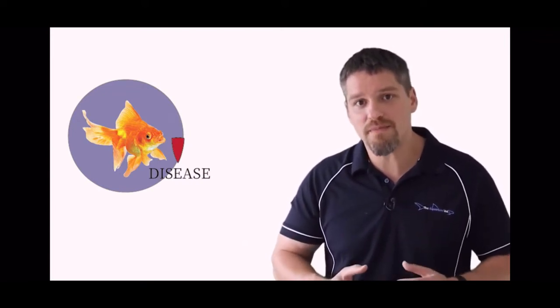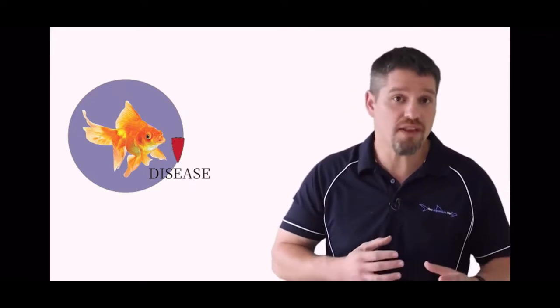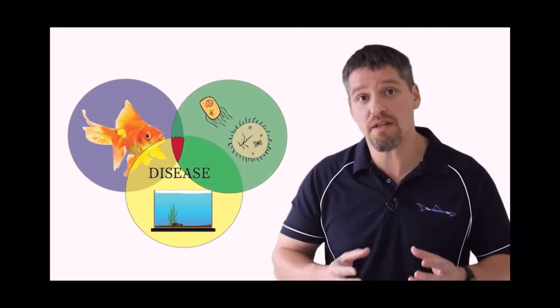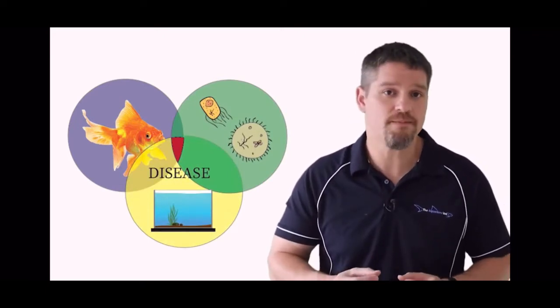When fish become sick, it's generally the result of the overlap between the host, a pathogen, and the environment, which is represented by the three circles of disease. Let's look at each one of these circles individually.